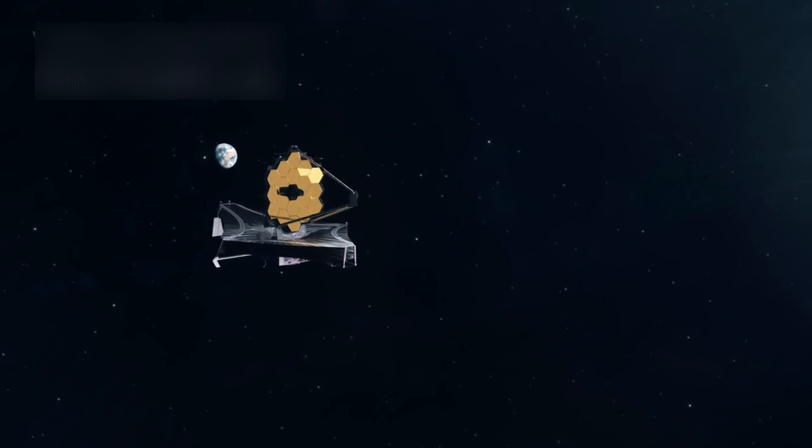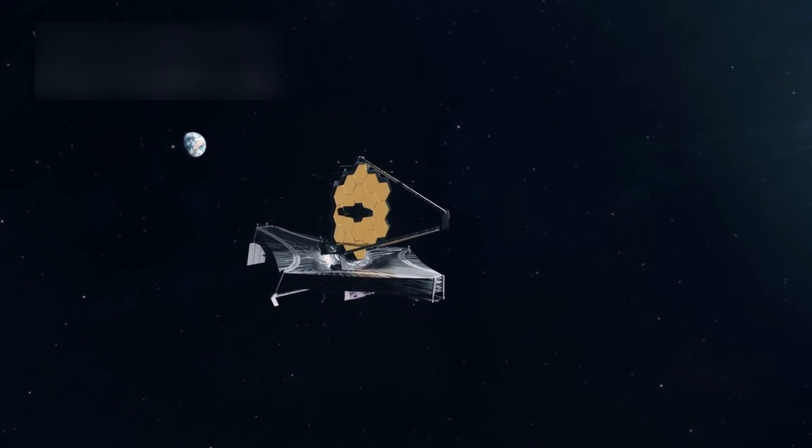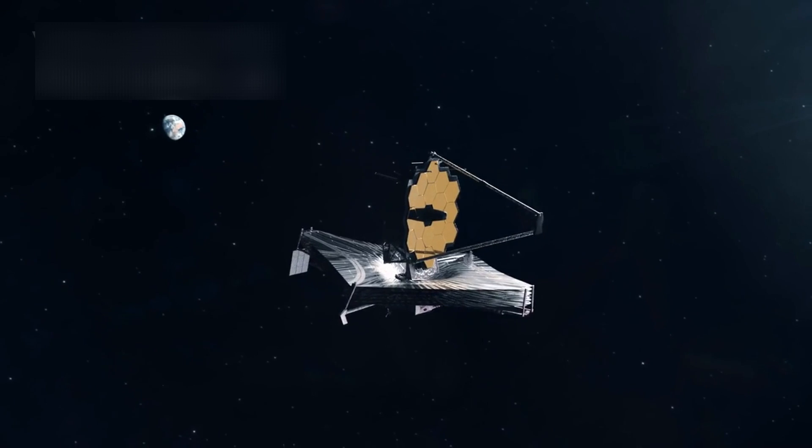Using the James Webb Space Telescope alongside cutting-edge Earth-based observatories, researchers have uncovered anomalies in Neptune's gravitational field, electromagnetic behavior, and heat output.